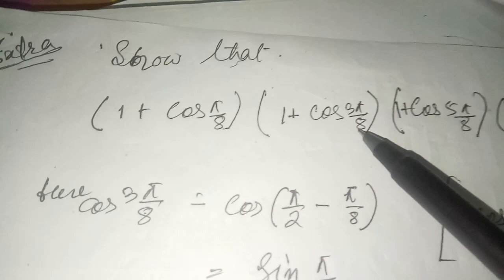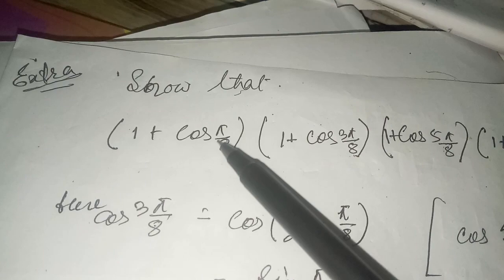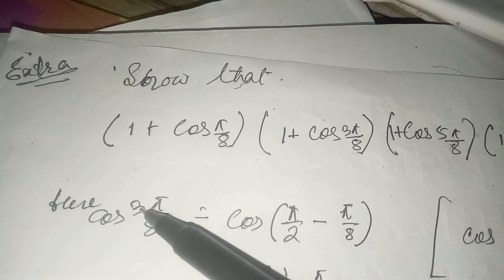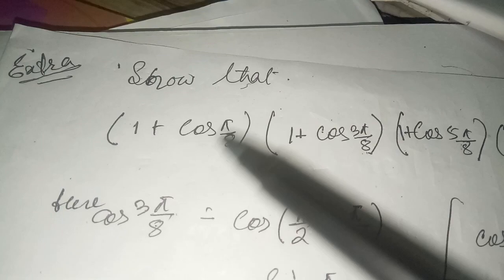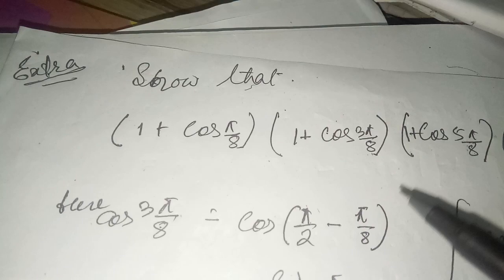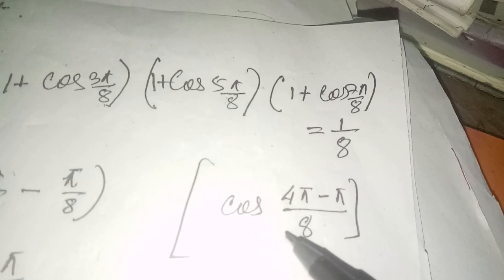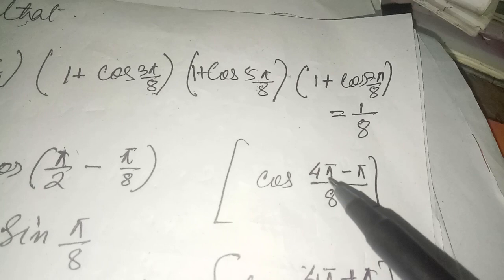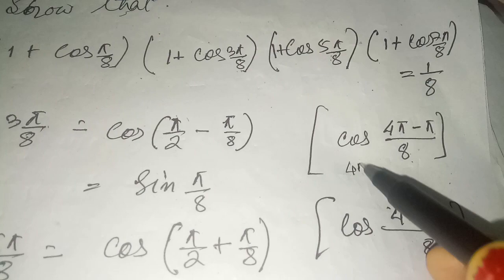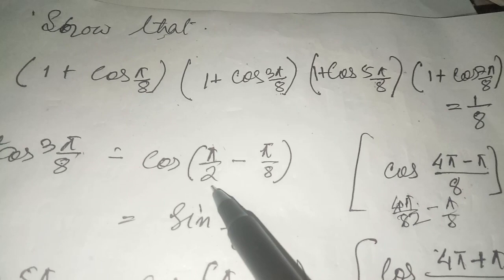First we will convert the angles 3π/8, 5π/8, and 7π/8 to simple acute angles. For 3π/8: since 3 is odd and 8 is even, the closest transformation is 90° minus π/8. We get this because 4π/8 minus π/8 equals 3π/8, and 4π/8 equals π/2, so 3π/8 equals π/2 minus π/8.